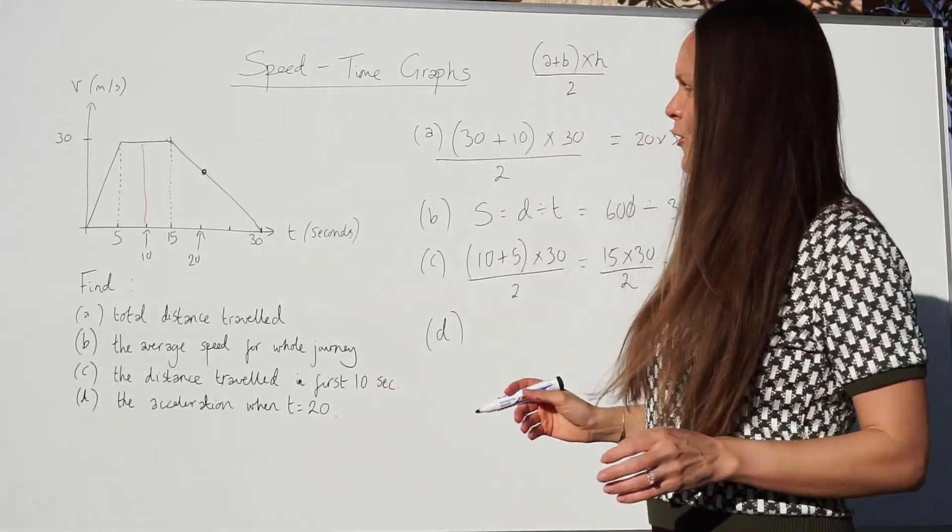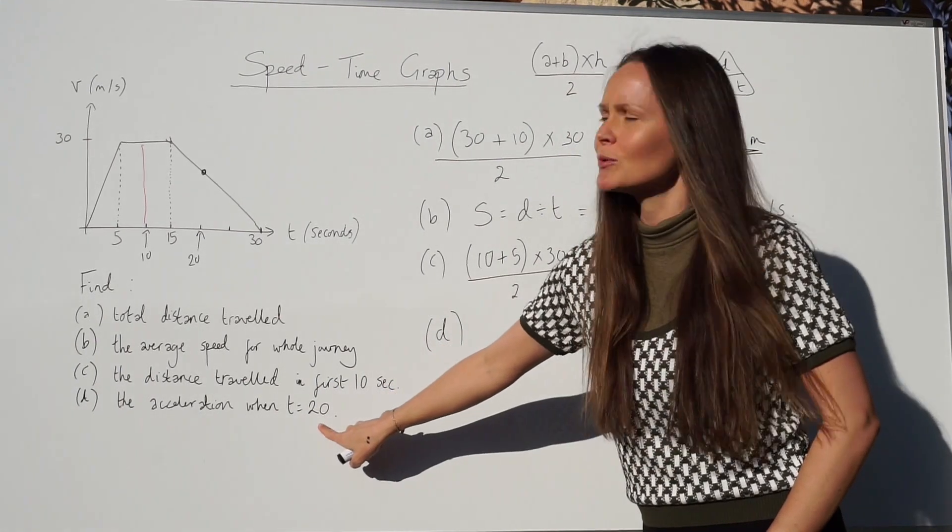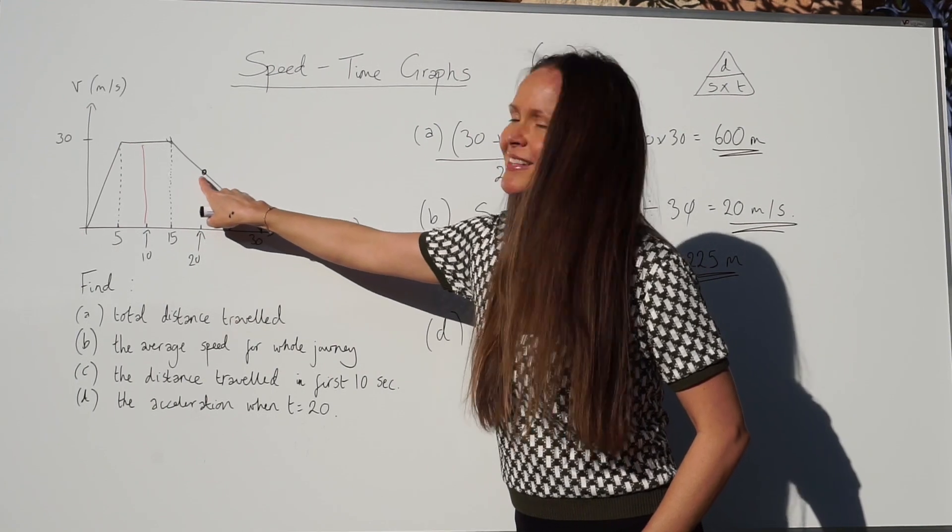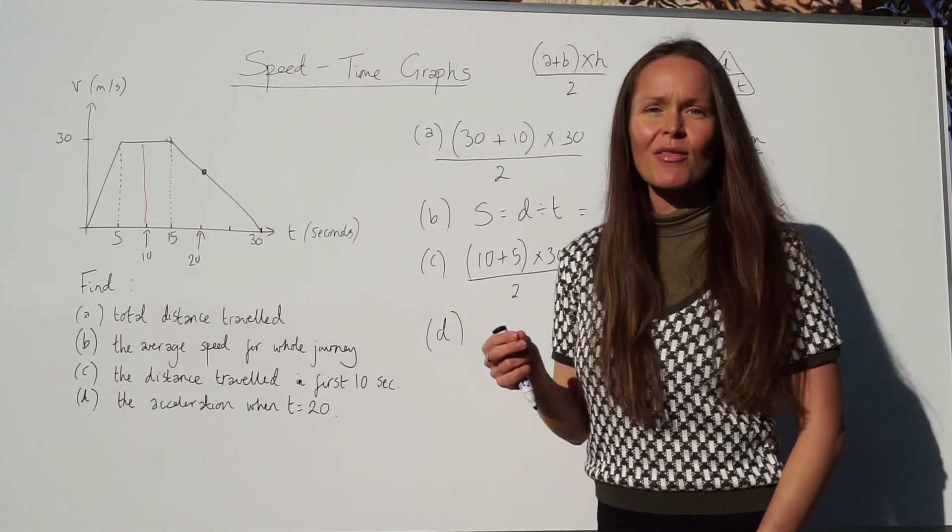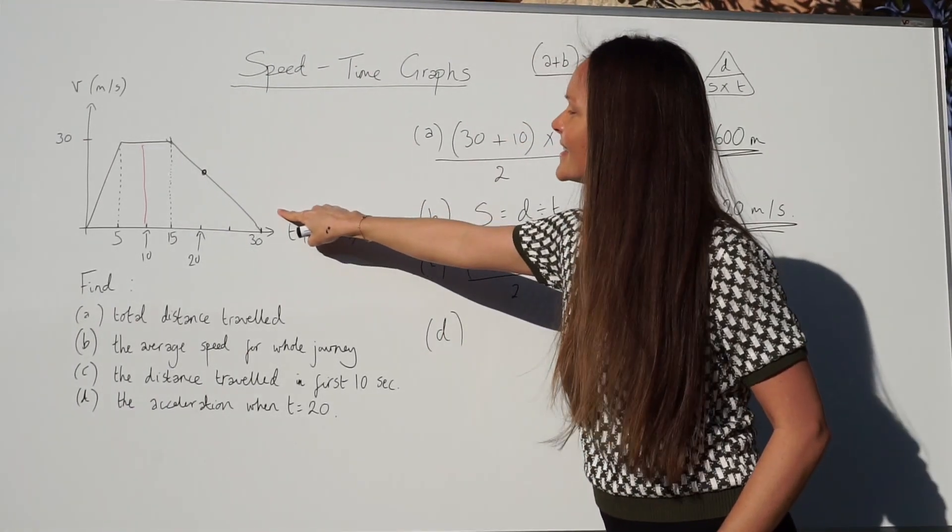To work out the last part of this question, finding the acceleration when time is equal to 20 seconds, look for 20 on your graph. So, here's 20 seconds, this part here. You need to work out the gradient of the line. We need to work out how steep this line is.